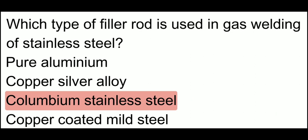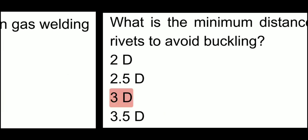Which type of filler rod is used in gas welding? If we have stainless steel material and need to do gas welding on it, which filler rod should we use? The answer is columbium stainless steel. So columbium stainless steel filler rod is used in gas welding of stainless steel.